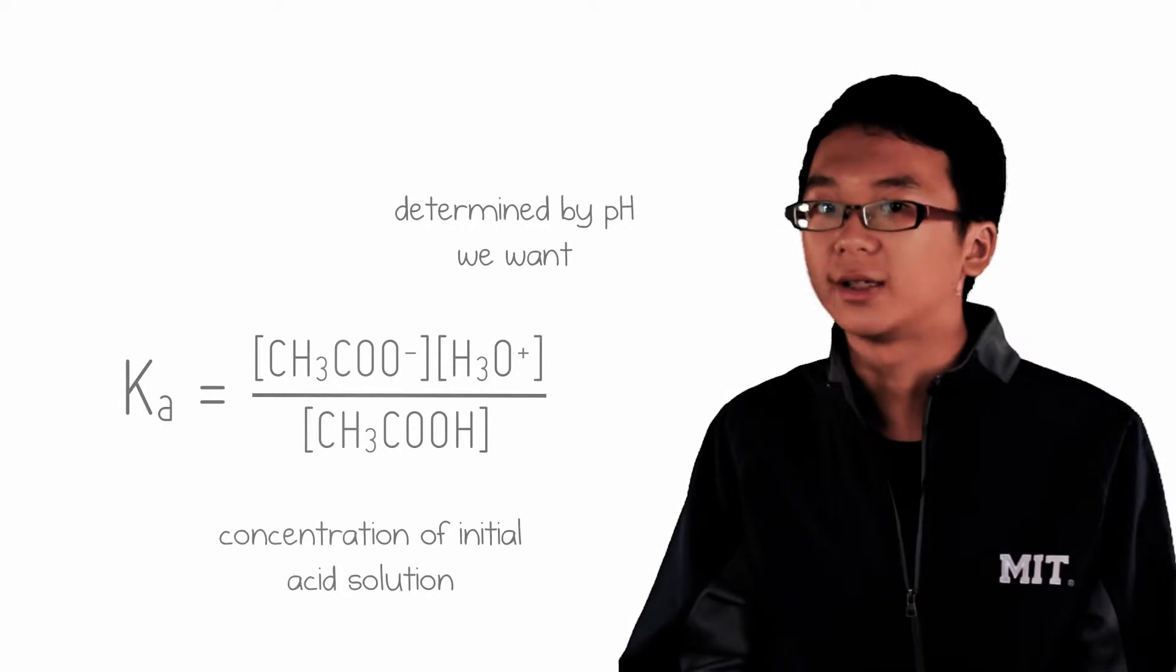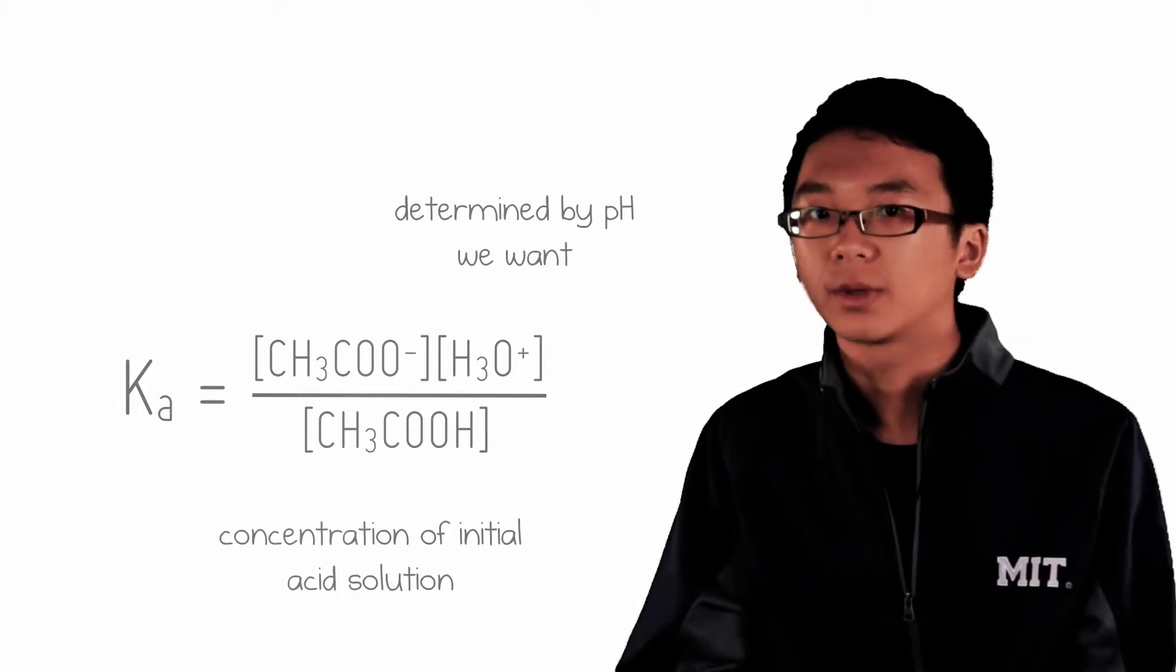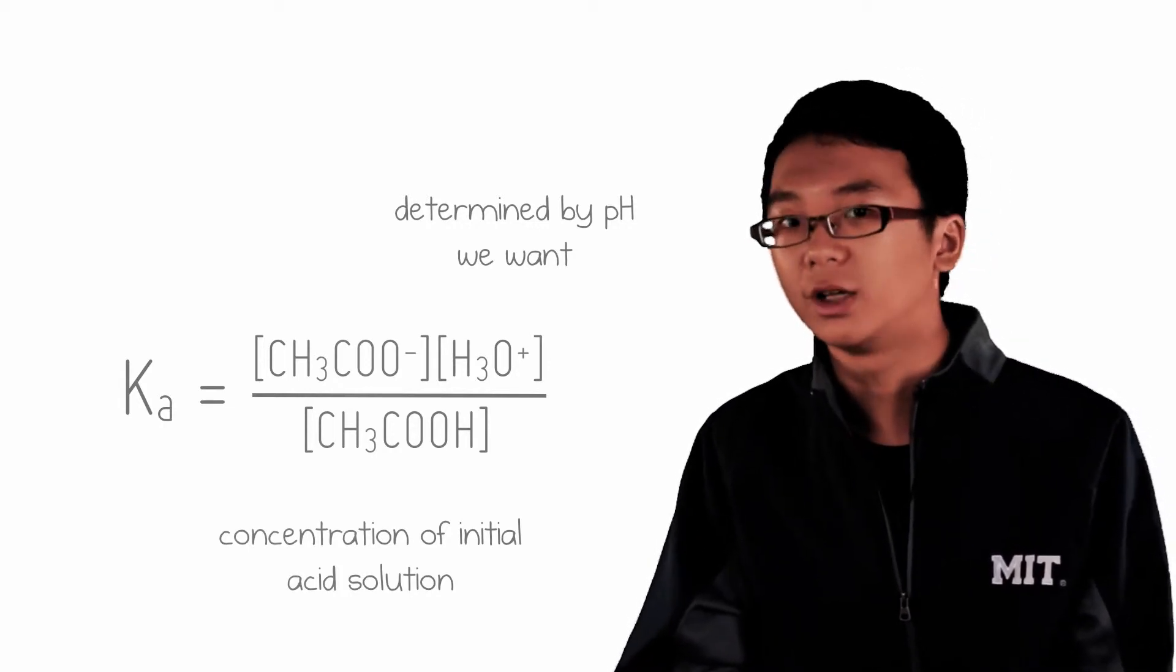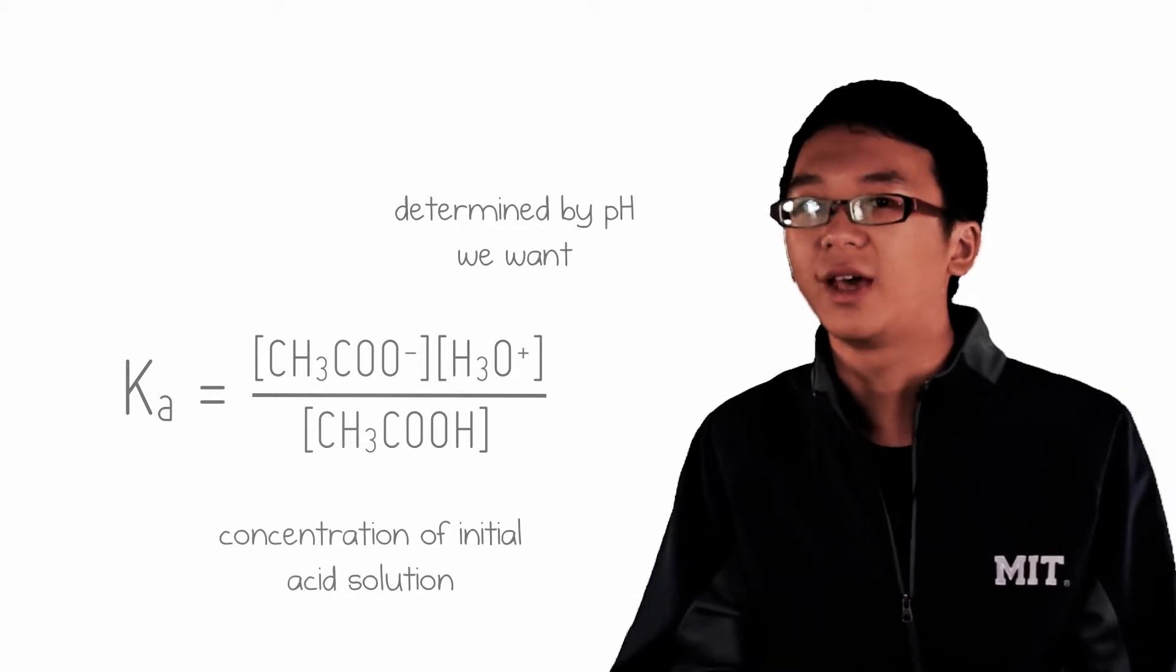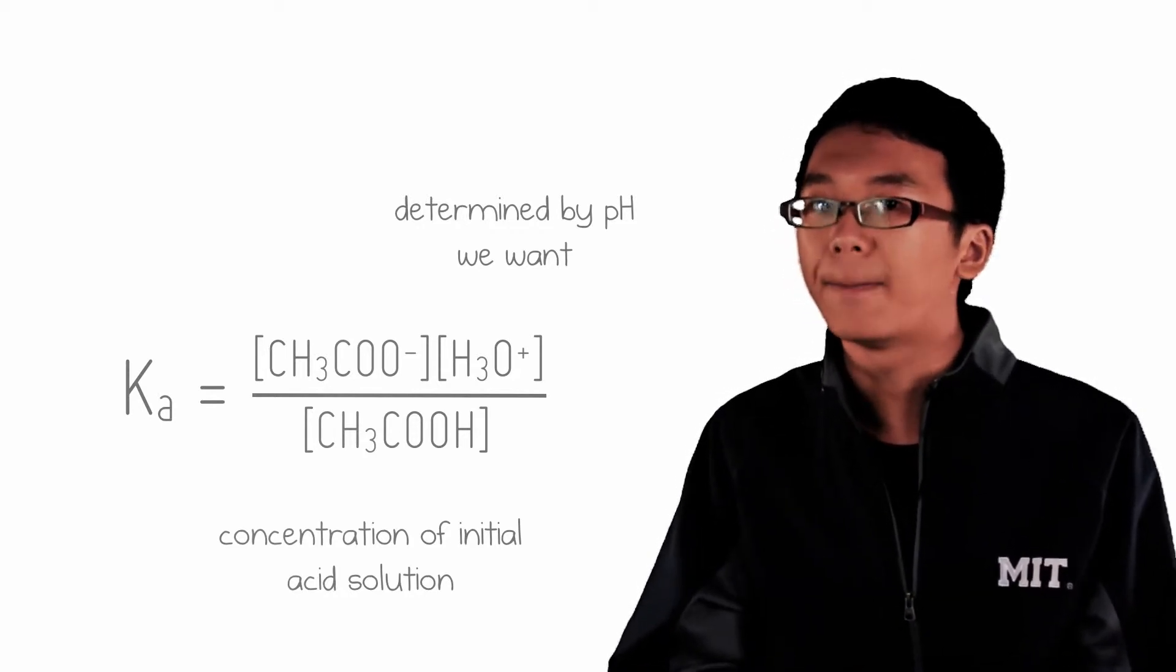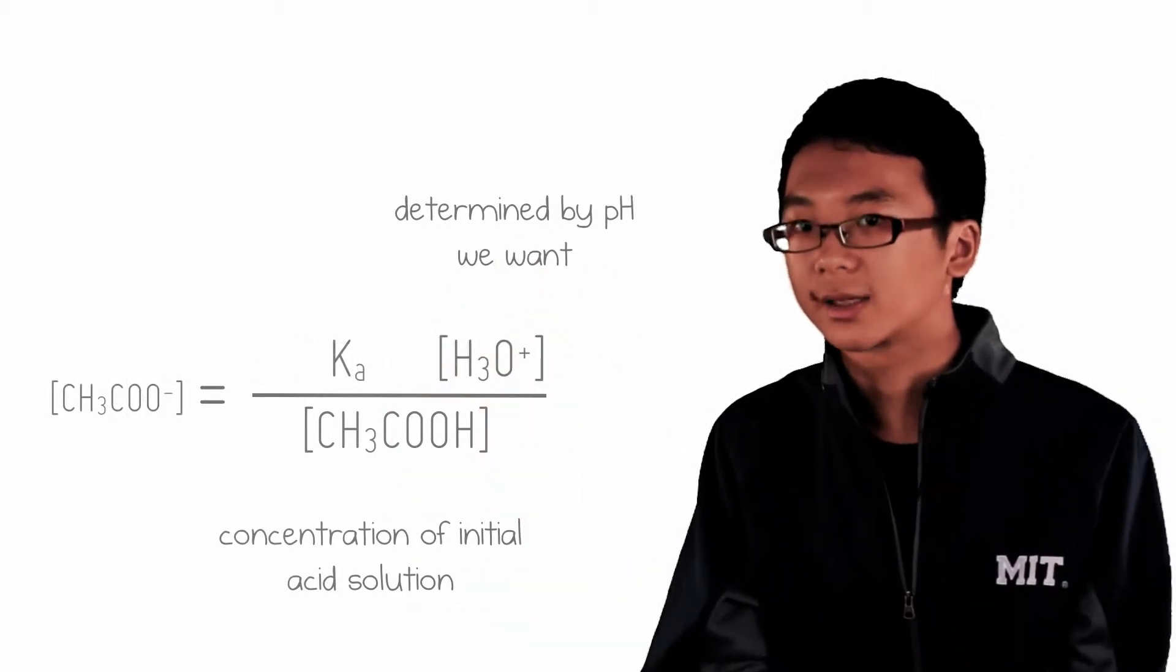What about the concentration of ethanoate? How much do I add? If you know your Ka, you know your pH, the concentration of hydronium that you want, as well as the concentration of the acid, then it is simply a matter of solving for one unknown, like this.